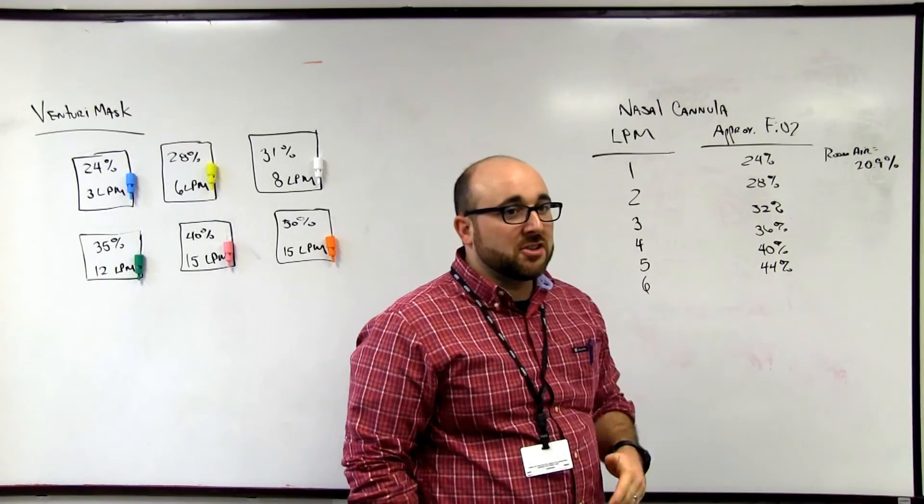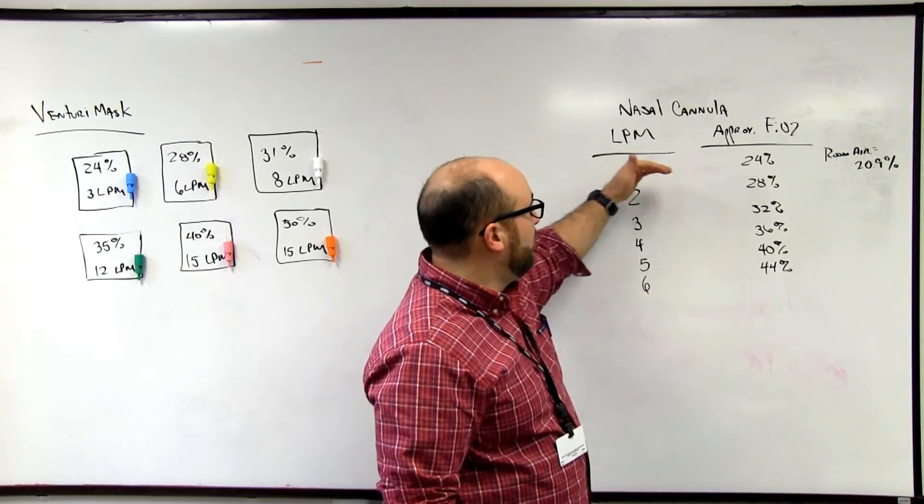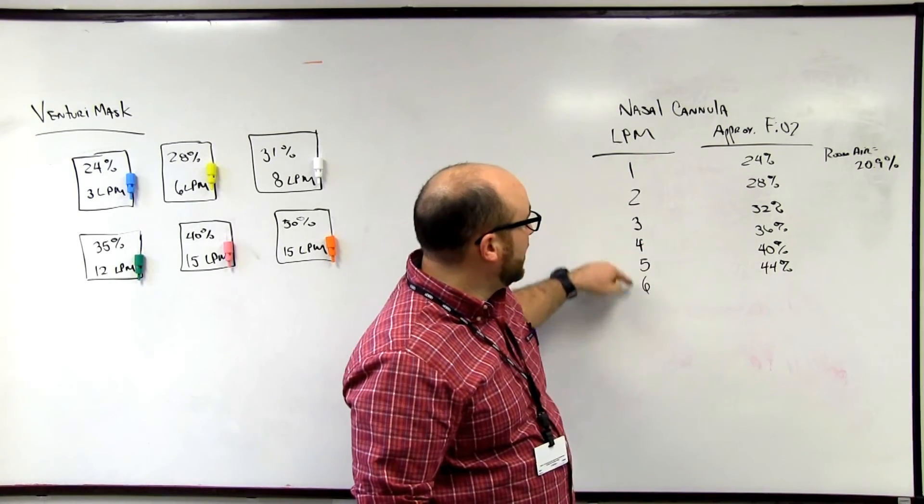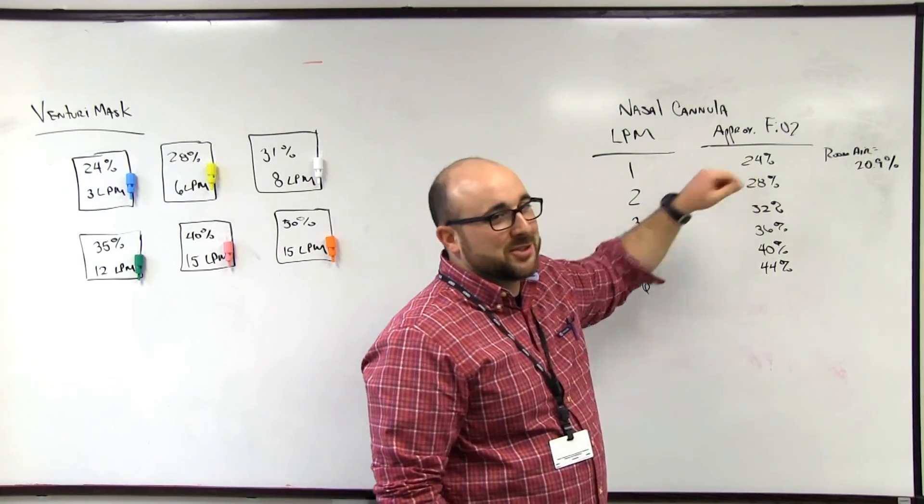So that will come into play when we start talking about increasing to other oxygen devices. So just 4% for every liter up to six, and these are all approximations.